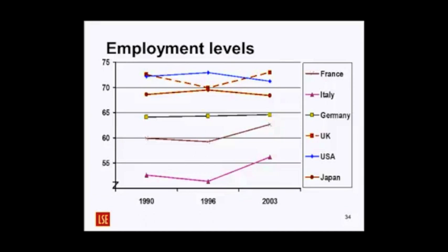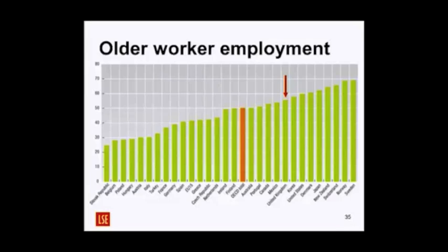Italy bumps along at the bottom — partly because of low levels of female employment, and partly because of a large informal sector: people are working but not paying tax and not appearing in the statistics. Looking at the older demographic — people 55 and over in 2005 — Britain is way up there in terms of actively employing older workers, above the OECD and Euro 15 averages. Belgium is right at the bottom, next to the Slovak Republic.